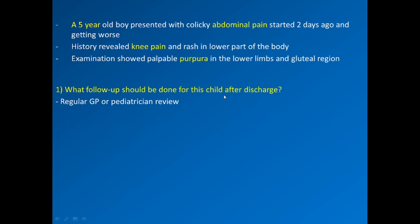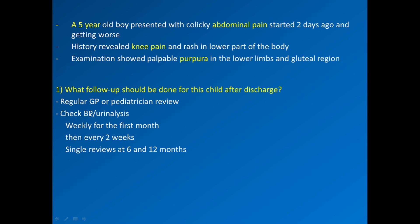What follow-up should be done for renal impairment? Regular GP or pediatric review. Check blood pressure and urine analysis weekly for the first month, then every two weeks, and a single review at 6 to 12 months. After 12 months, if there are no issues, you can discontinue the follow-up.